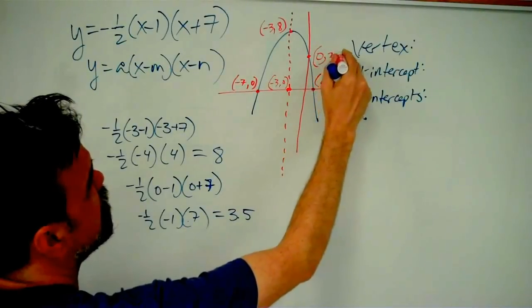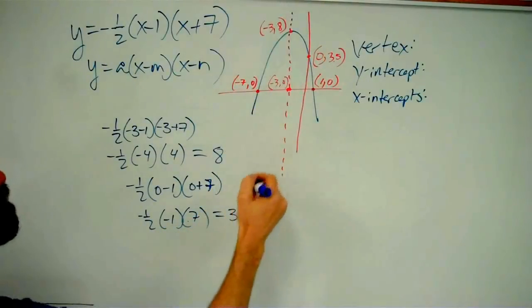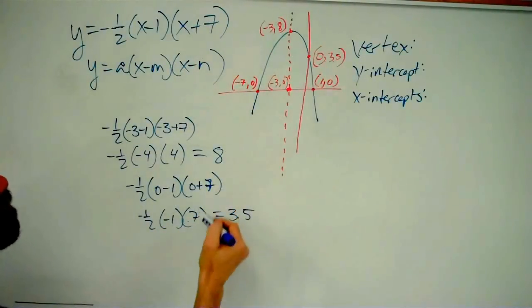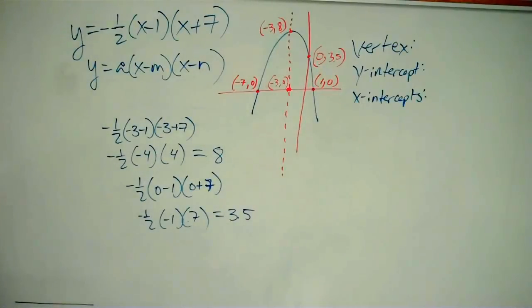So zero comma three point five. There is my vertex. There is my y-intercept. Here are my two x-intercepts. And we're done.